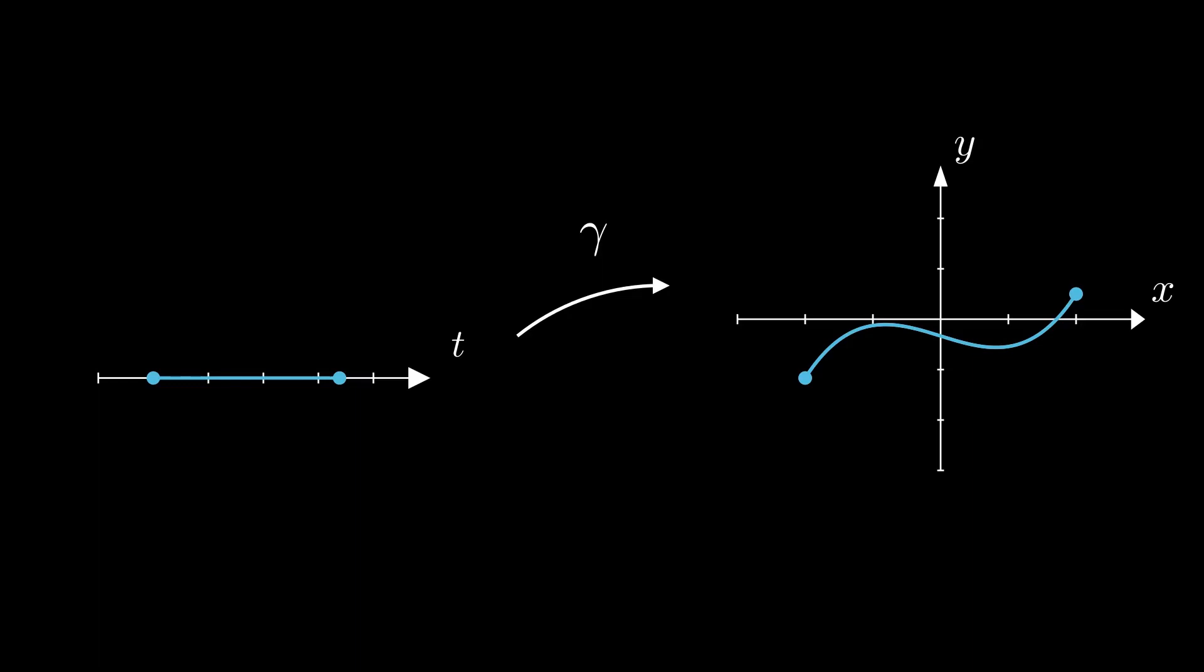Of course, one can always look at each coordinate independently and write our function as a pair of real functions of one real variable. The fact that the function gamma is continuous is reflected in the fact that both functions x of t and y of t are continuous.